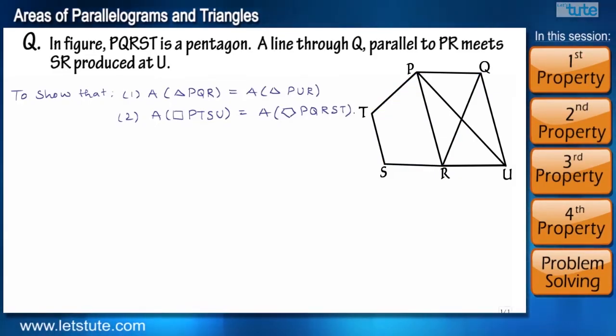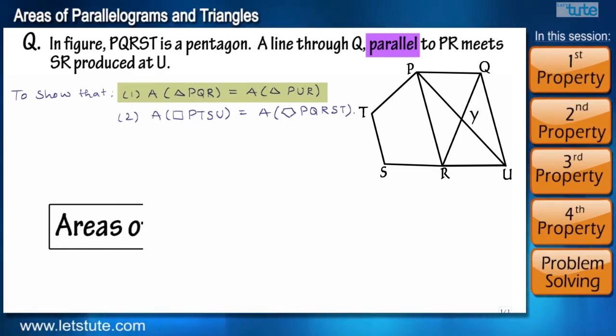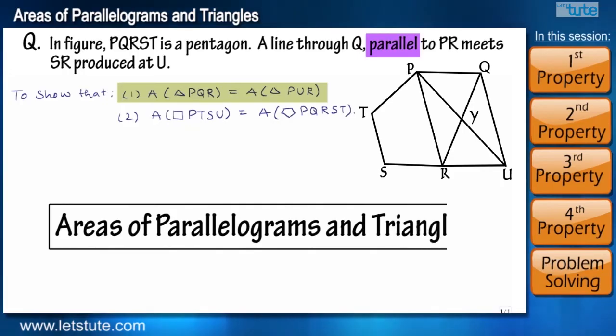Before we start, let's name the point of intersection of PU and QR as Y. Friends, if you look at the question, the question has words like areas of triangles and parallel lines. So by looking at these keywords, you can directly say that the problem is based on areas of parallelogram and triangle chapter.